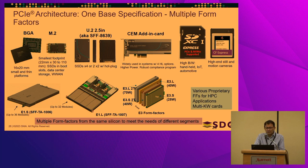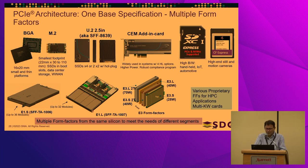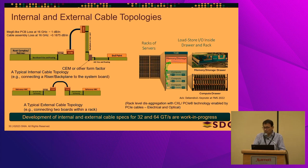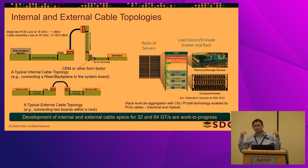PCIe supports a wide range of form factors as expected given how many places it goes — M.2, U.2, CEM, SD Express, E1 and E3/EDSFF form factors which run on PCIe as the base interconnect. We're also working on cable topology — both internal cable for 32/64/128 gig use cases and external cable for disaggregating resources with CXL. The aspiration is to extend from board level to rack level and potentially beyond, which brings us to optical.